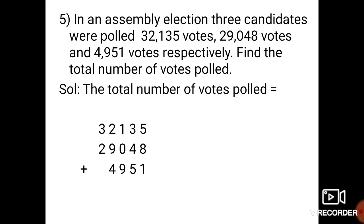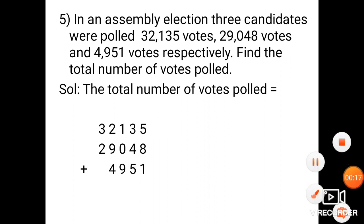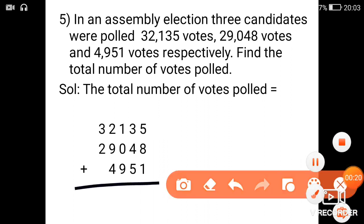Fifth problem: in an assembly election, three candidates were polled 32,135 votes, 29,048 votes and 4,951 votes respectively. We need to find the total number of votes polled. So we will add all the 3 candidates' votes polled to get the total number of votes polled.